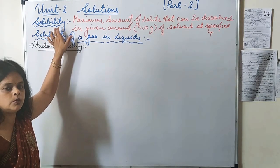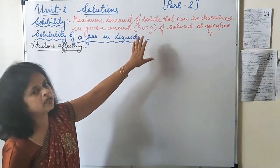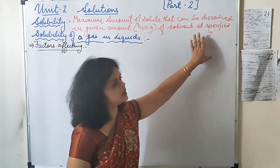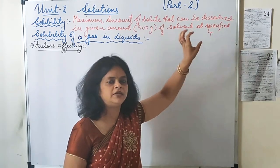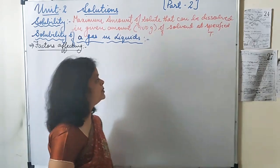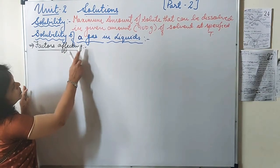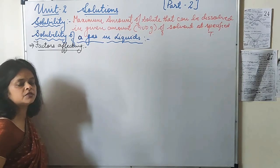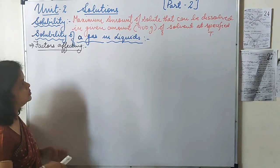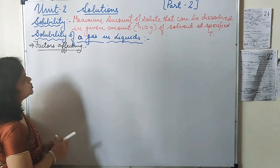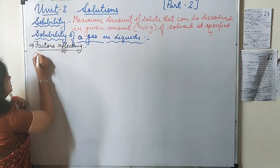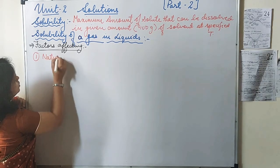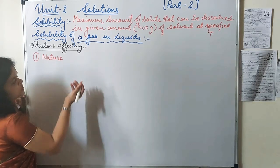Let's revise the meaning of solubility: the amount of solute that can be dissolved in 100 grams of solvent at a definite temperature. Now, for the solubility of a gas in a liquid, let's look at the various factors which are going to affect this dissolution. The first factor is the nature of the solute.